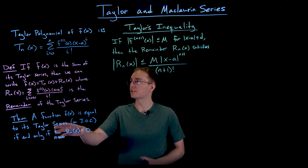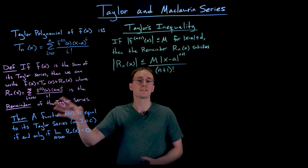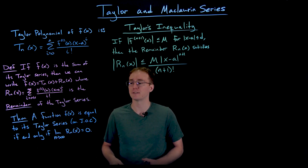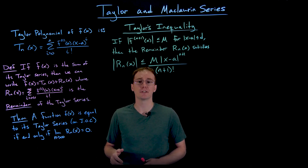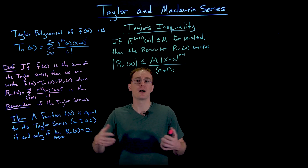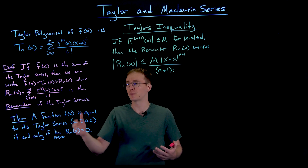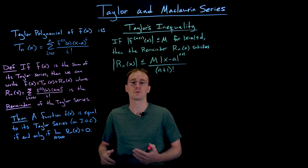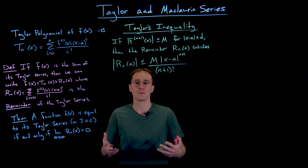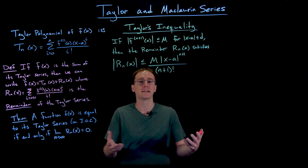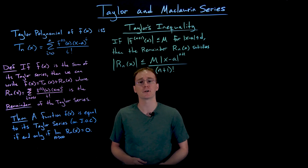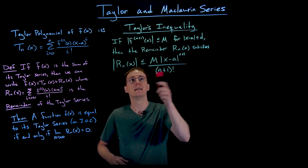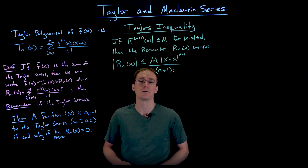What this theorem doesn't tell us is how to actually evaluate the remainder. The remainder itself is an infinite series, so if we want to know how much error there is in our approximation, we'd have to find the sum of that infinite series. Instead, we're going to use something like Taylor's inequality to help us out.